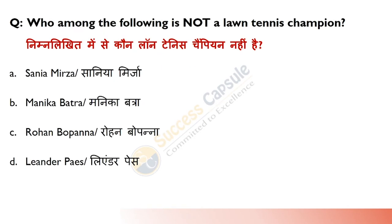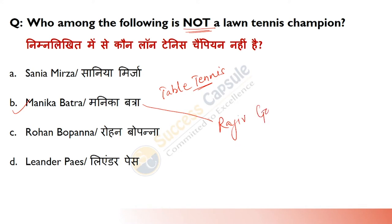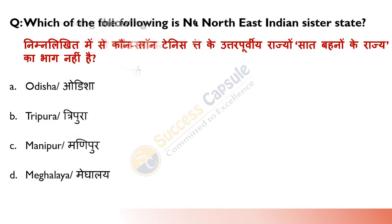Which of the following is not a champion of lawn tennis? Answer is B — Manika Batra, because she is a table tennis player. She received the Rajiv Gandhi Khel Ratan Award for 2020.